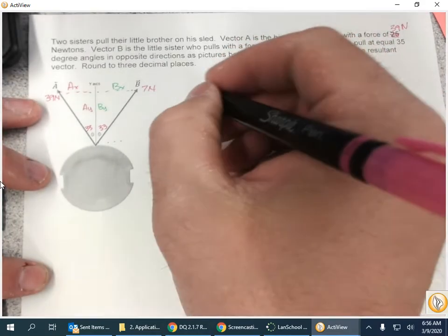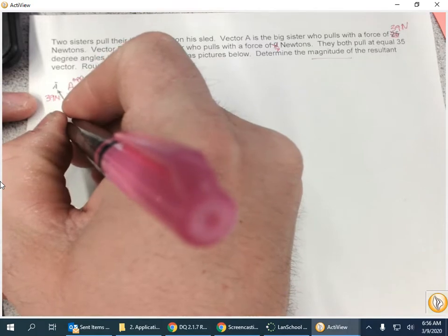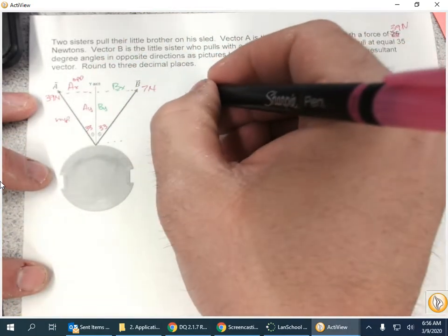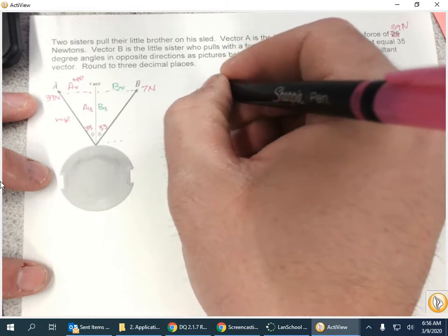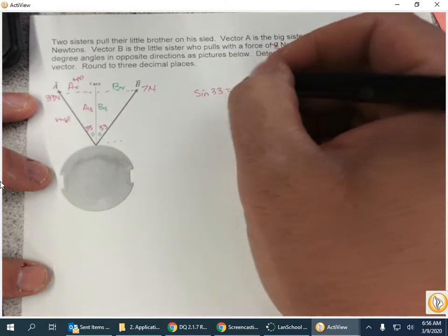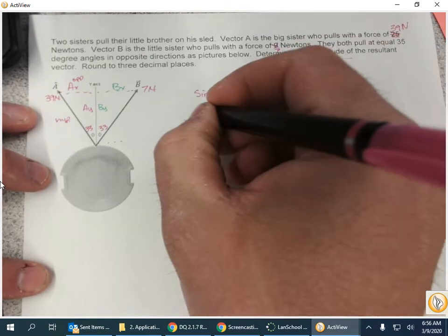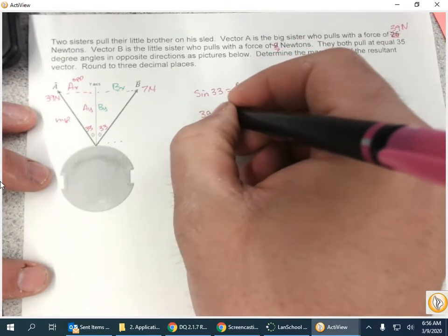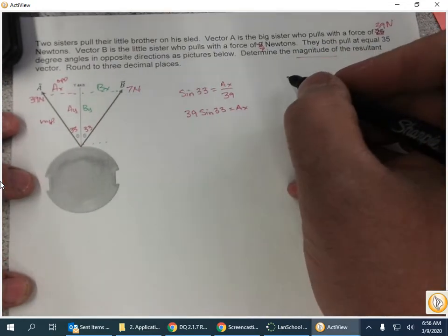Starting with A, here's opposite, here's the hypotenuse. To find out what Ax is, we're going to do sine of 33 equals Ax over 39, so 39 times the sine of 33 is going to be my Ax value.